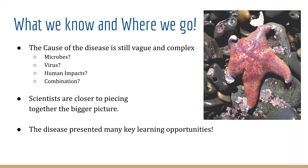Even though the disease has brought about much concern for the overall well-being of the ecosystems, it has also allowed scientists to understand further the dynamics and importance of Seastars within the rocky intertidal that couldn't have been achieved experimentally. The case of Seastar wasting disease is one of the best examples of natural selection and adaptation within a species to survive. Scientists have learned an incredible amount about this species that couldn't have been achieved without the disease.